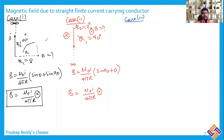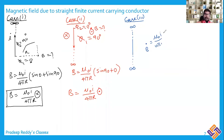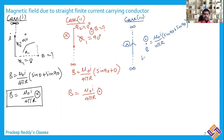Case 3: When both ends are extended to infinity — a fully infinite straight wire — and you find the magnetic field at a perpendicular distance R. Both φ₁ = φ₂ = 90°. B = (μ₀i / 4πR)(sin90° + sin90°) = μ₀i / 2πR. If current is going upward, the magnetic field is into the plane on one side and out of the plane on the other. Capital R is the perpendicular separation from the wire to the point.